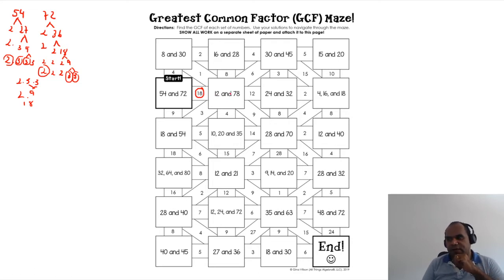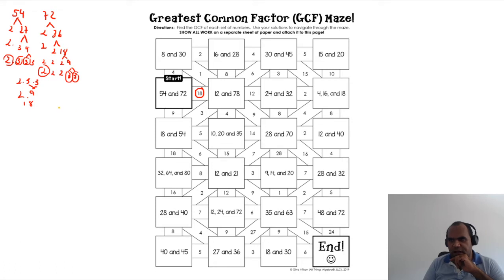Right now let's work on 12 and 78. Let's change the color here. I'll work on the first line and second line; the rest is up to you. Starting with 12: it breaks down into two and six, then two and two and three.